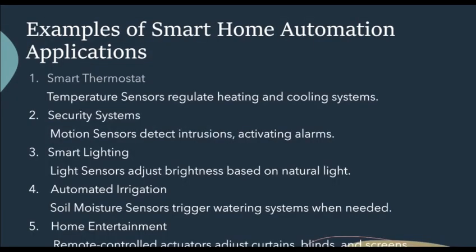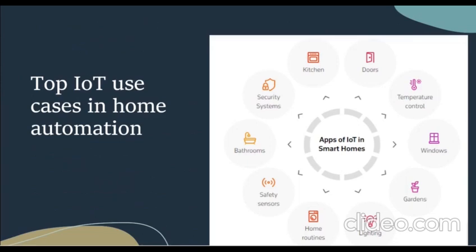Let's look at examples of smart home automation applications. First, smart thermostats, where temperature sensors regulate heating and cooling systems. Second, security systems, where motion sensors detect intrusions and activate alarms. Third, smart lighting, where light sensors adjust brightness based on natural light. Fourth, automated irrigation, where soil moisture sensors trigger watering systems when needed. Fifth, home entertainment, where remote-controlled actuators adjust curtain blinds and screens. Other top IoT use cases in home automation include security systems, doors, temperature control, gardens, home routines, safety sensors and many more.